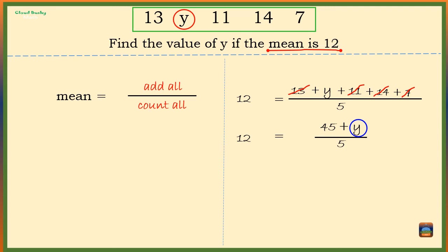Let's multiply both sides by 5. That gives us 45 + y = 12 × 5, which is 60.